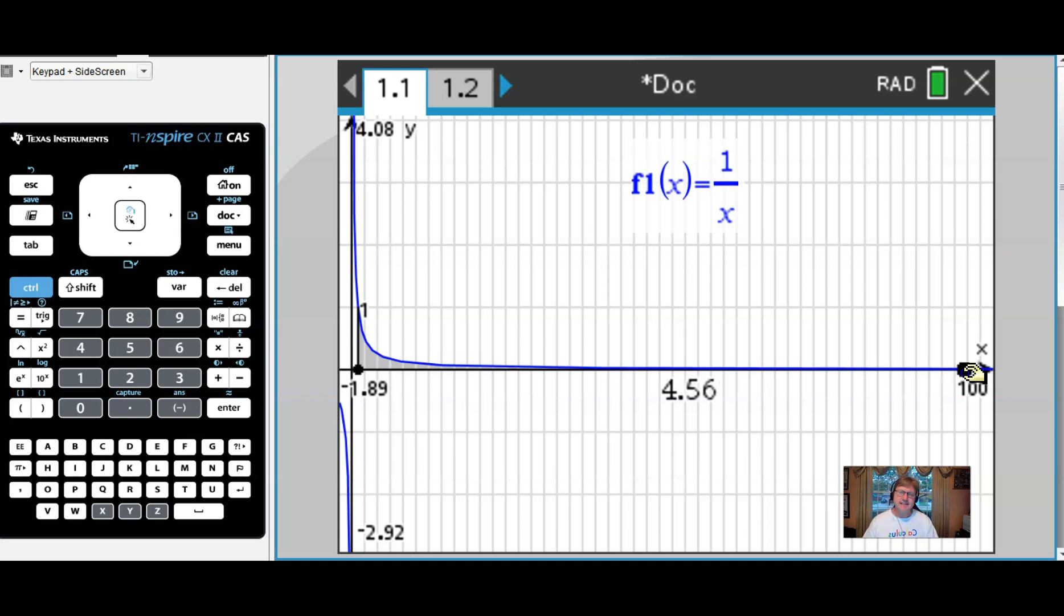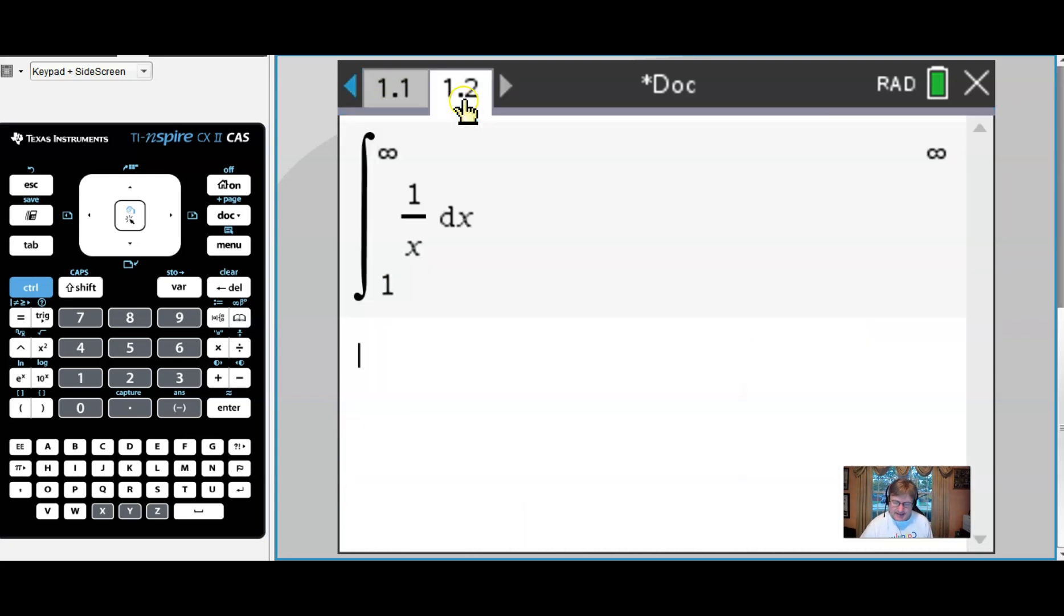It's not increasing quite as fast, but we deduced that this would end up increasing, increasing, increasing over time, and it would be essentially too big to count, and we said that this was going to be a divergent improper integral. And as you can see from the second page, by being able to use the functionality of the calculator, I can use infinity as an upper boundary and verify this answer.